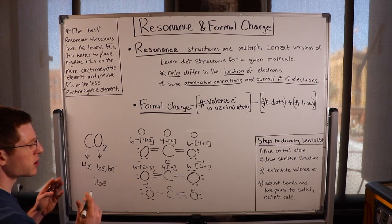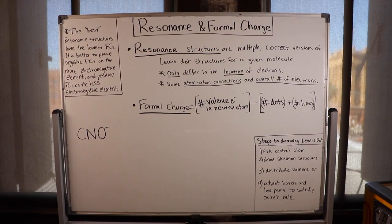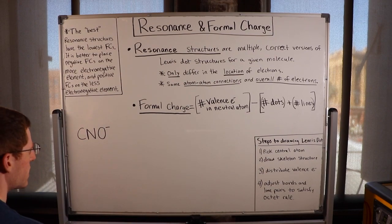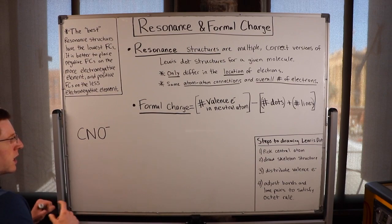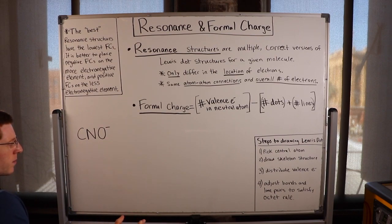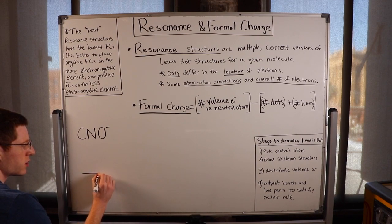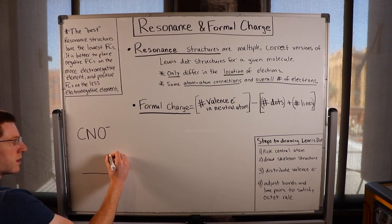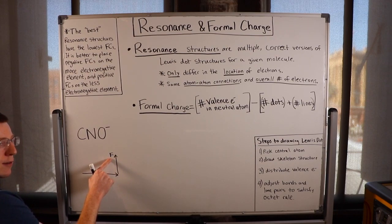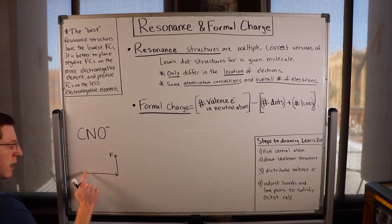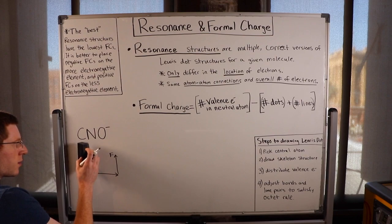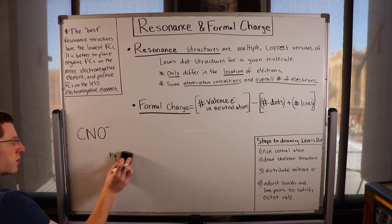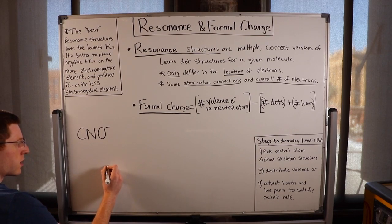The next molecule for which I'd like to draw the resonance structures is CNO minus. The first step is to pick a central atom — the central atom is usually the least electronegative one. Looking at C, N, and O on the periodic table, electronegativity increases going right and up, so fluorine in the top right is the most electronegative. Carbon is the furthest to the left of these three, so it will be our central atom.